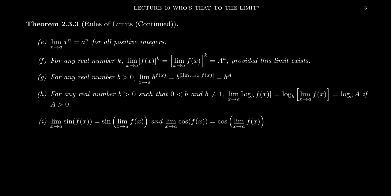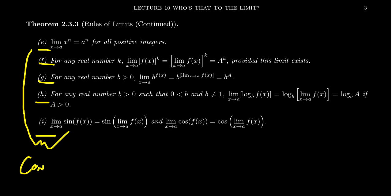Since we can take limits of quotients and we know the limits of sine and cosine, we can use this to take limits of other trigonometric functions as well. These properties — where you can push the limit inside the function — relate to a property which we refer to as continuity, which is a topic we will talk about in the next lecture in much more detail. The typical functions we know about — exponentials, logs, trigonometric functions, algebraic functions — are continuous on their domains.